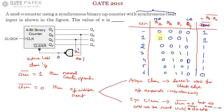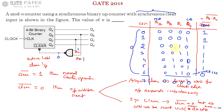Since it is synchronous clear, it will wait for one more clock edge to reset to 0000. So the state 0110 is treated as a valid state. At the seventh clock edge, the reset operation takes place. The unique states are 0 through 6 — that is seven unique states, so this is called a mod-7 counter.